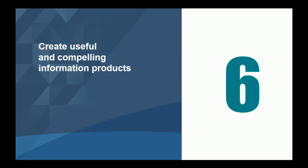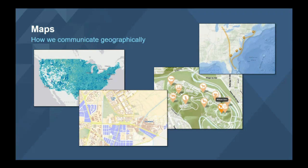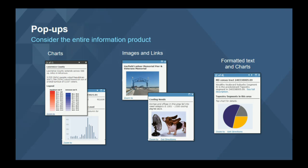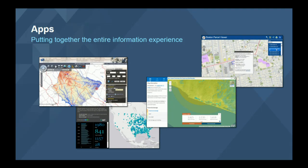You've registered your services and published others. Now you want to create really useful and compelling information products — really, applications. A great app starts with a great map, and one of your first steps is to build great maps: configuring great pop-ups and leveraging all the styling capabilities. When you marry a map with an application, it completes the information experience for the user. A lot of these applications are generic for ad hoc exploration, others are more task-focused, and still others bring in additional content or capabilities.